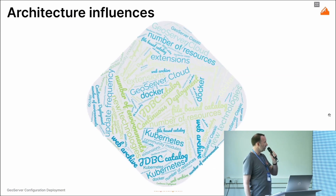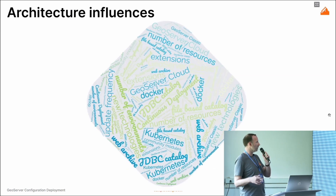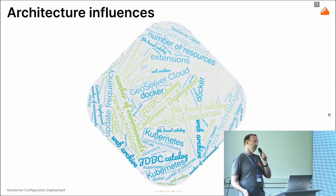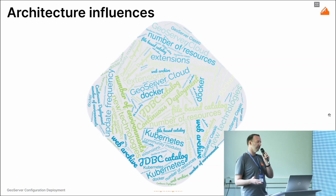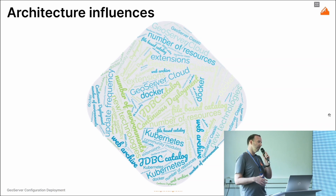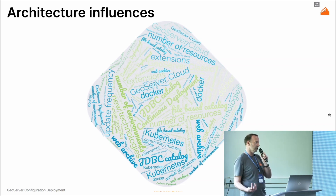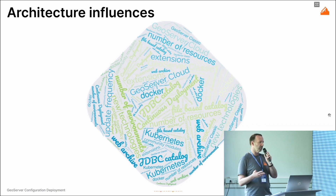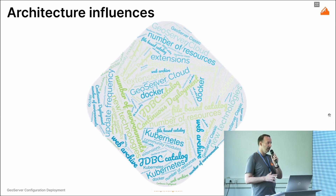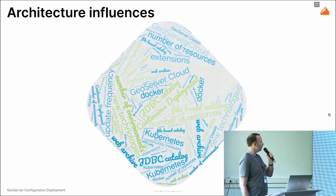Another point to take into account is how your architecture influences how you do the deployment. Based on which edition of GeoServer you are using — the classic edition or the GeoServer Cloud edition — and whether you use a web archive or Kubernetes, you are going to have influences on your deployment. There is also the catalog: if you use a JDBC catalog or a data folder, you will also have a number of changes in your deployment.